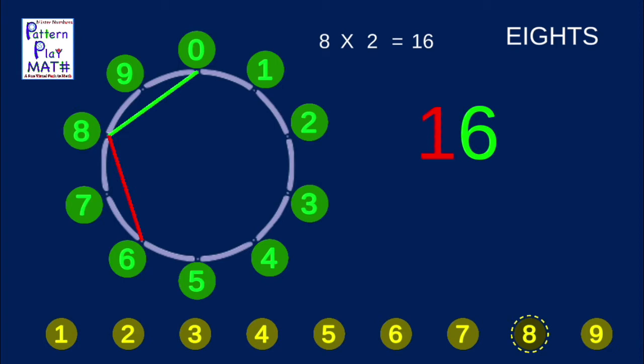Since you passed 0, you add 10, and you're at 16. Around 8 more takes you to 4. You went past 0 again, so the big numbers now say 24.